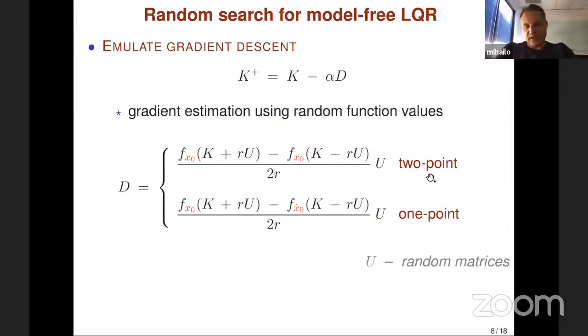It's a standard fact that two-point gradient schemes reduce variance. You need to be careful in how you choose these random matrices U, which are assumed to be uniformly distributed over a sphere, and this smoothing parameter R, because you need to guarantee closed-loop stability. All of these issues are addressed in our paper.